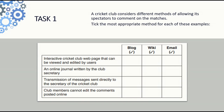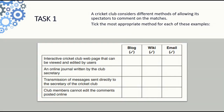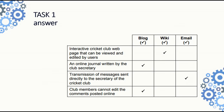Next, they want to keep an online journal which is written by the club secretary — one person — and nobody else needs to be able to edit those articles. So the best choice here would be a blog. Also, this cricket club wants to transmit messages sent directly to the secretary of the cricket club. For transmission of messages, the best way to do this would be using email.